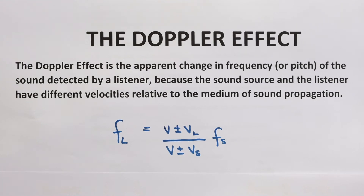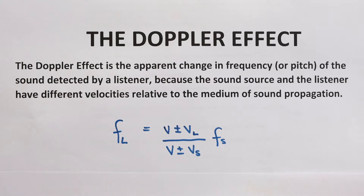The Doppler effect. In this short video we are going to look at the equation for the Doppler effect and then we'll do an example or two. The Doppler effect is the apparent change in frequency or pitch of the sound detected by a listener because the sound source and the listener have different velocities relative to the medium of sound propagation. The equation we use for calculating the frequency observed by a listener is this equation.